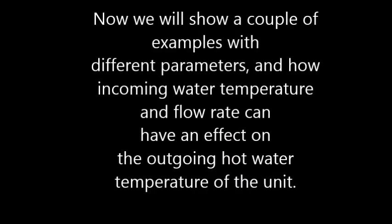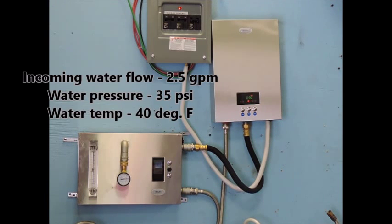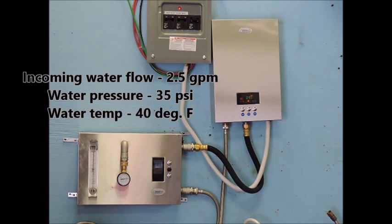Now we will show a couple of examples with different parameters and how incoming water temperature and flow rate can have an effect on the outgoing hot water temperature of the unit. In this shot you can see we have added an additional device to monitor our water flow, pressure, and incoming water temperature. When the display reads overflow, it is trying to tell you the incoming water is too cold to heat to the desired temperature at the speed it is moving through the heater, so we would need to reduce the flow of water.